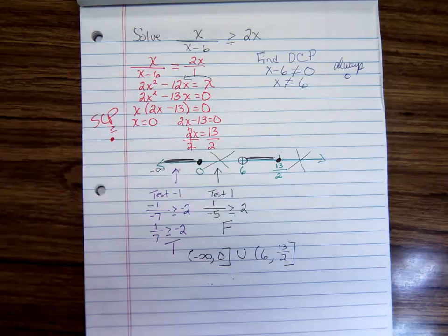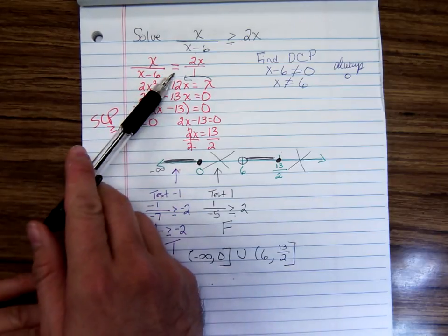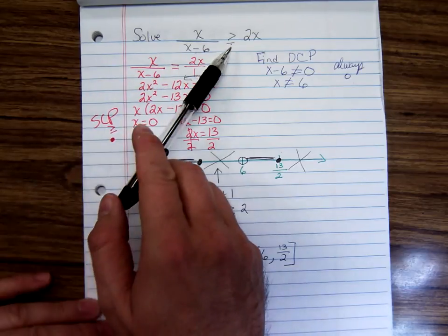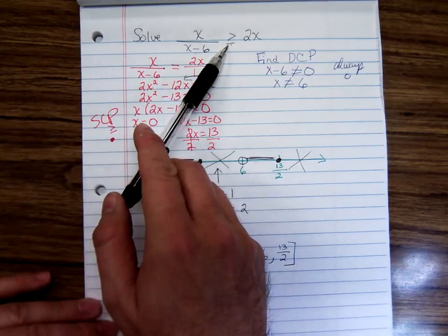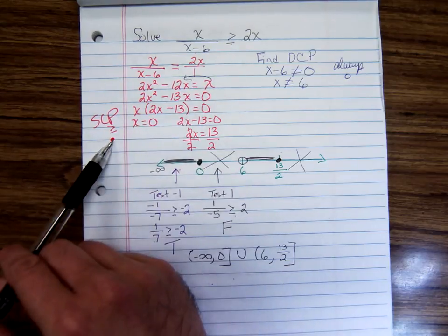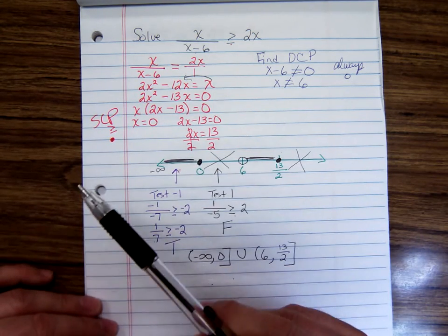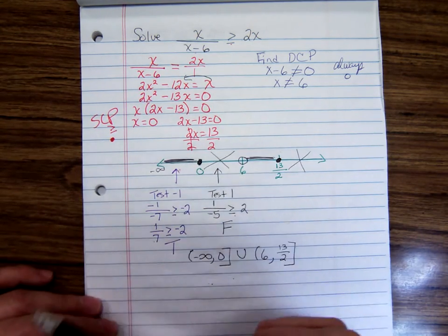Very nice method. The cut point method, solve it with an equals to find the solution cut points. Look up here to decide between open and closed circles. Closed for solution cut points if there's an equal, open if there isn't.